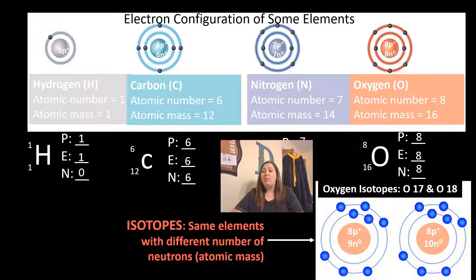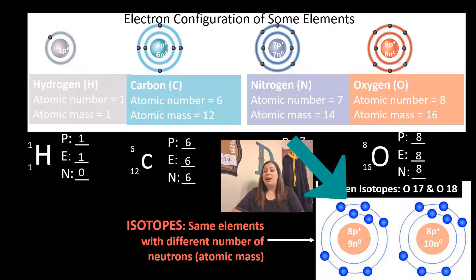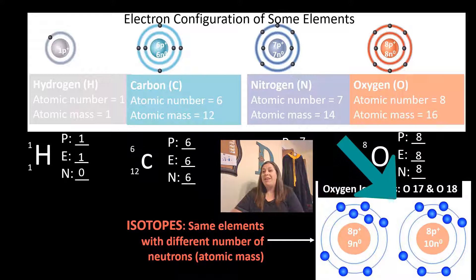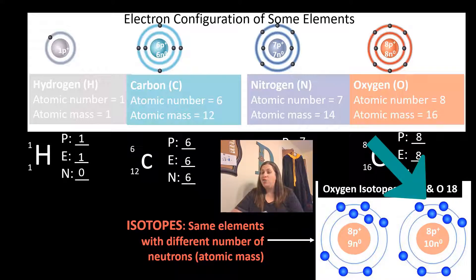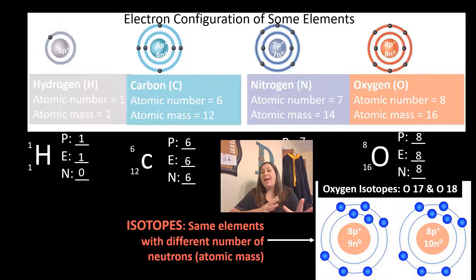For example, oxygen-16 has eight protons and eight neutrons for a total of 16. Another isotope has eight protons and nine neutrons, so eight plus nine equals 17 — this oxygen isotope is heavier. Another has eight protons and ten neutrons, making it oxygen-18, which is even heavier. When we see the atomic mass change, that's telling us the number of neutrons has changed.